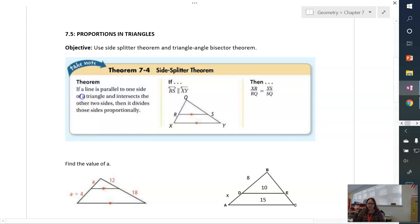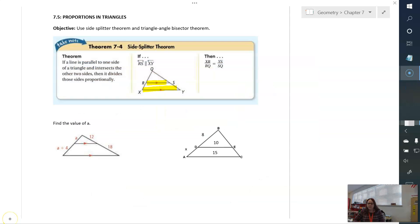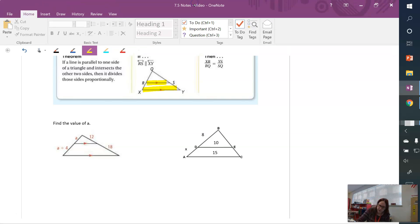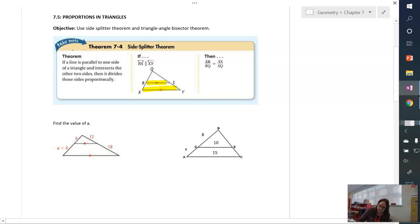Our first one is the side splitter theorem. And what the side splitter theorem says is if you have a triangle that has a segment that's splitting it, and notice these segments are parallel. The segments are parallel to the base. And what happens when you do that is you can write a ratio relating the distance between here, x and r, to the distance between q and r.